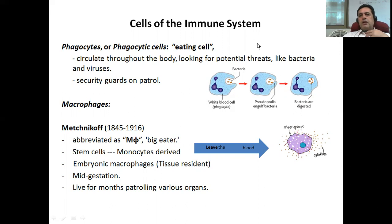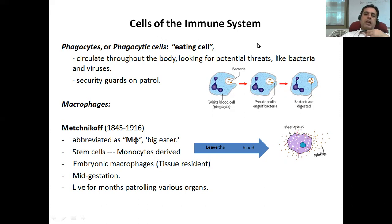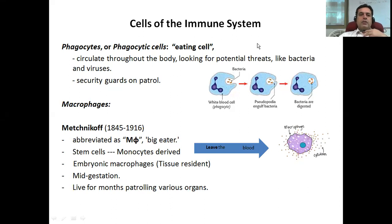Macrophages are very interesting and unique cells, which are phagocytic cells that eat upon other cells, organelles released from damaged cells, viruses, and bacteria. They are one of the most important cells of our immune system.